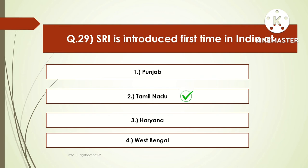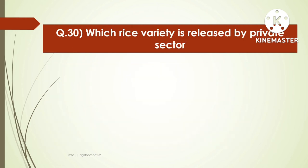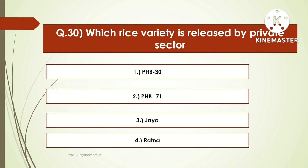The System of Rice Intensification method of sowing in rice was first adopted at Tamil Nadu Agricultural University in Tamil Nadu. The next question is: which rice variety was released by the private sector? Options are PHB 30, PHB 71, Jaya, or Ratna. The right answer is PHB 71. PHB 71 is a private sector released variety of rice.